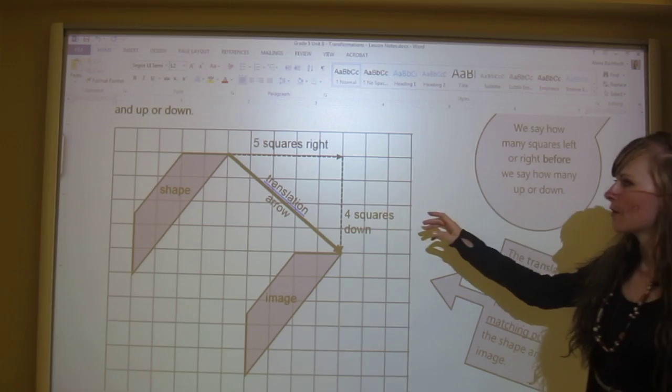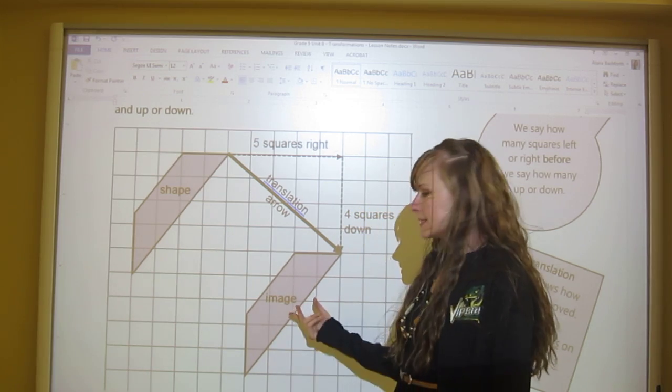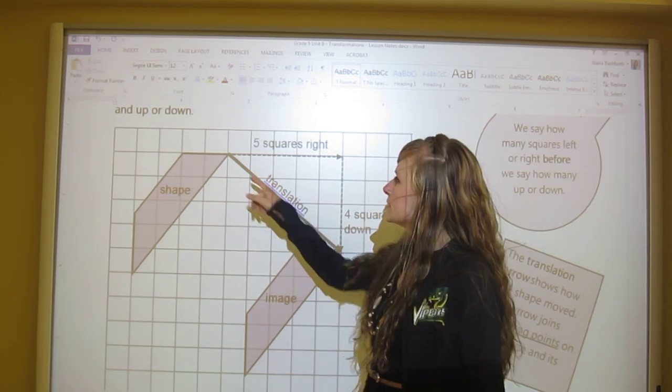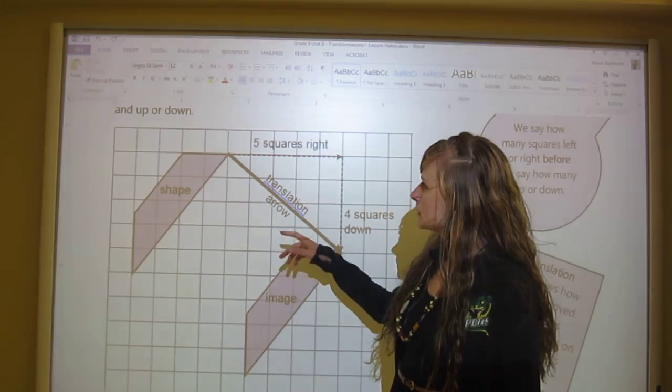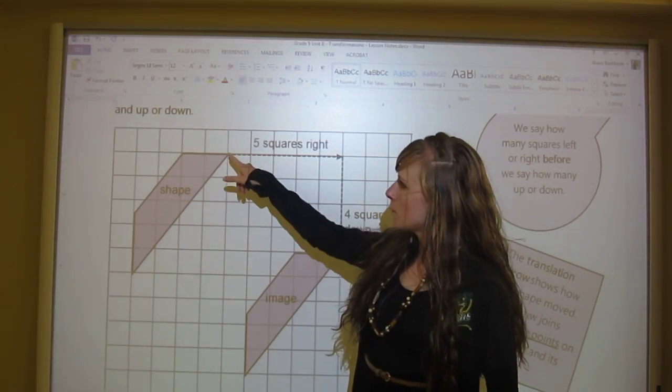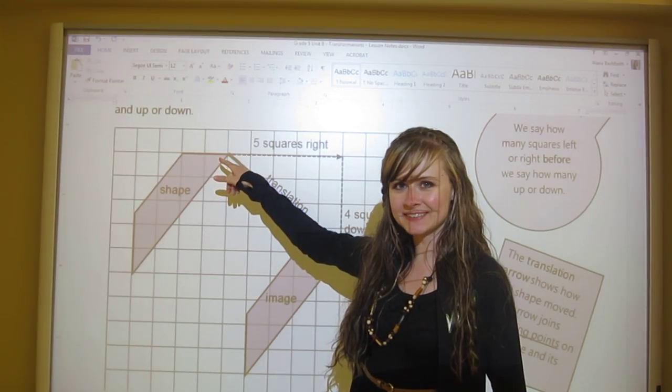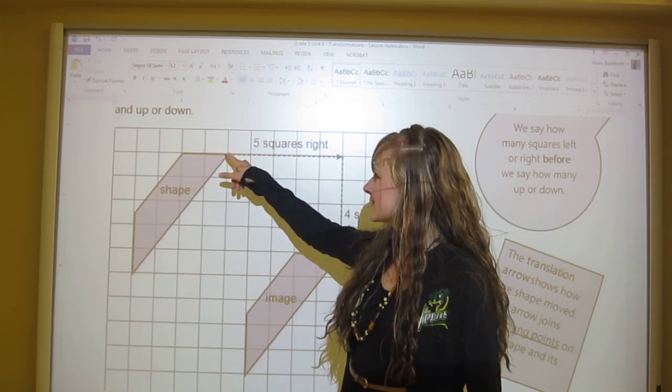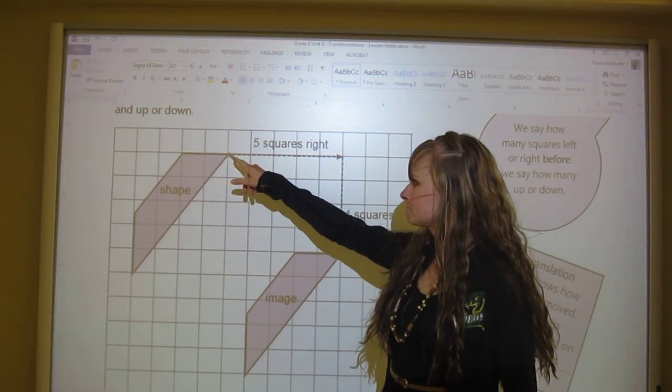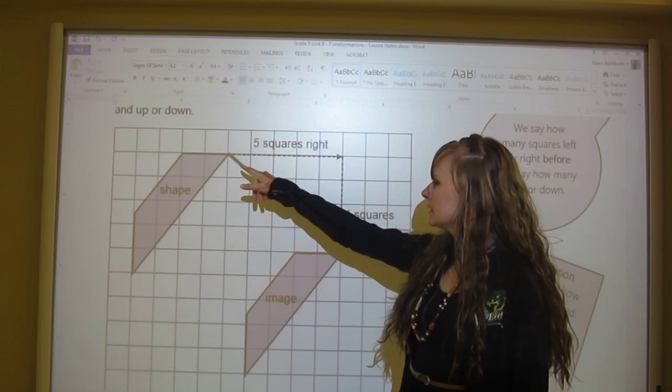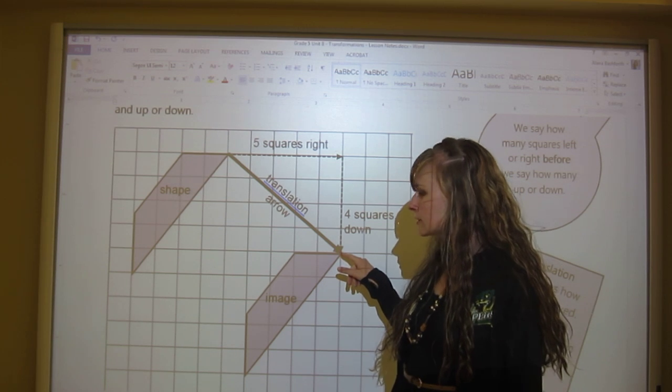Here's an example. We've got this shape here and it says shape - that means that's the original. When it says image, that means that's the copy. So we pick a point on the shape. We're going to pick the most top right hand corner. Then we're going to count how many squares over and how many squares down it took for the same corner to reach this point right here.